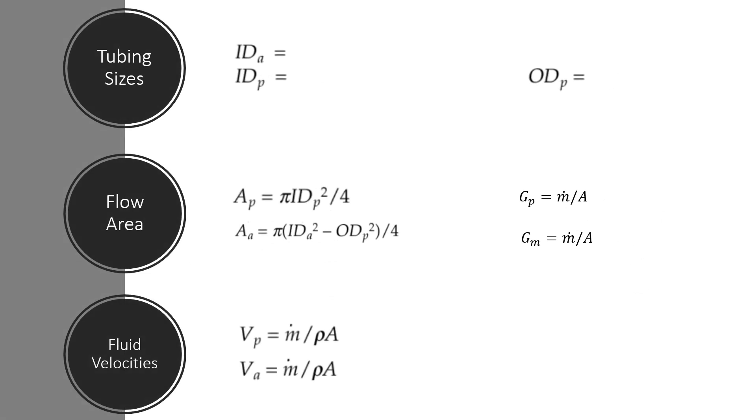For tubing sizes, we have inside and outside diameters. For inside diameter, we have two kinds: tubular and annular, but for outside we just have tubular.